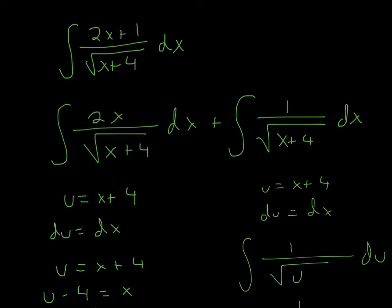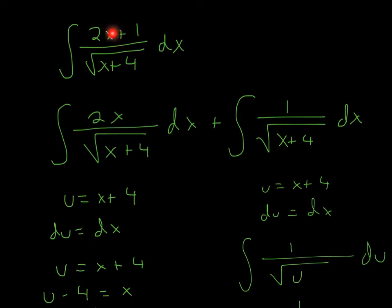In this problem, we have the integral of (2x + 1) over the square root of (x + 4) dx. What we can do right off the bat is split it up into two separate integrals — we put 2x in one and 1 in the other. We can do that because it's addition in the numerator.